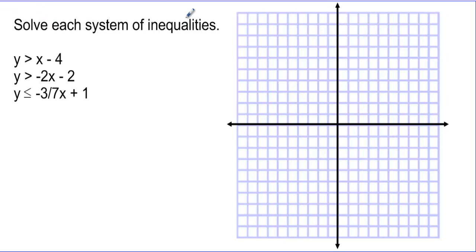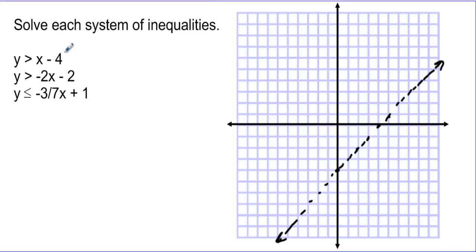Solve each system. The first line has a y-intercept of negative 4 and a slope of 1, and we want this line to be dotted. The second line has a y-intercept of negative 2 with a slope of negative 2, so down 2 over 1 repeatedly.